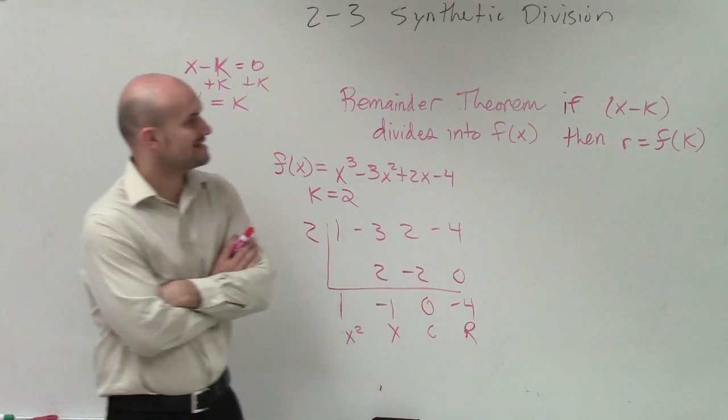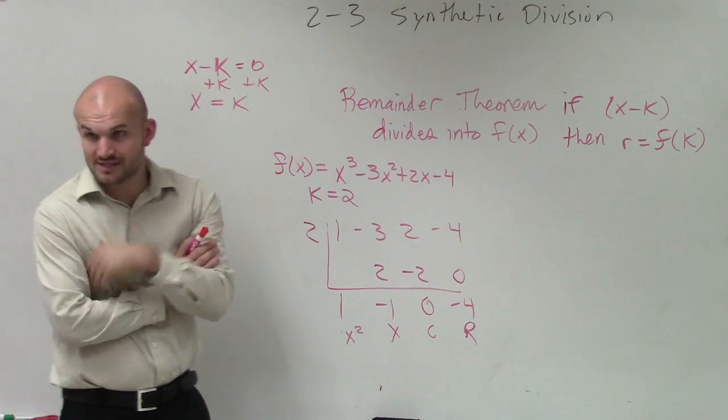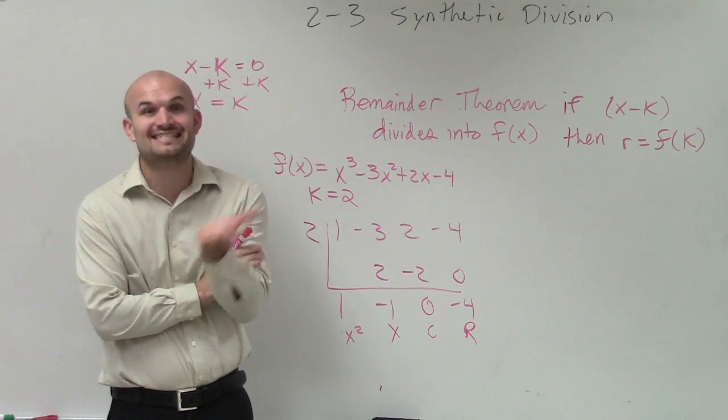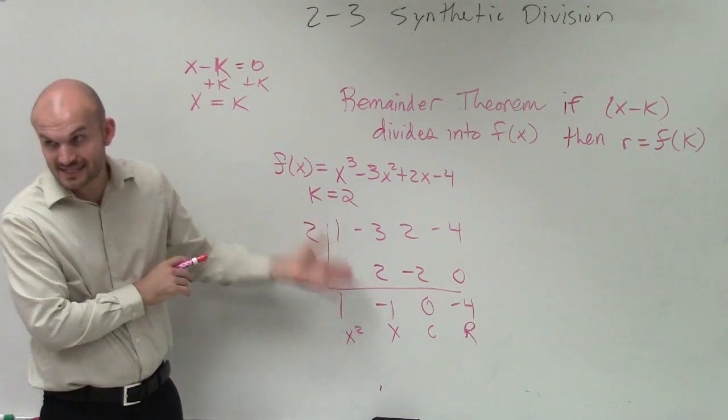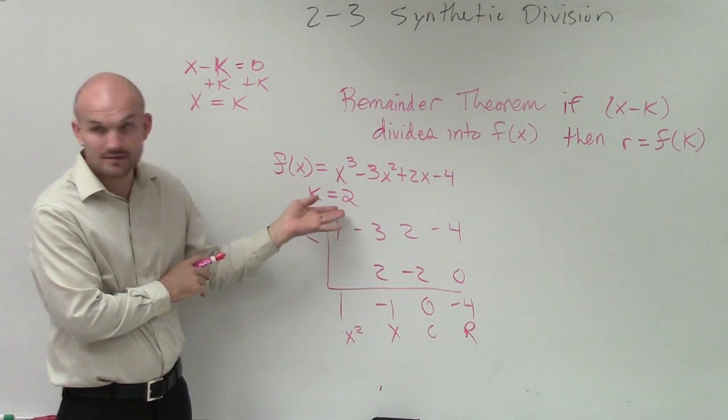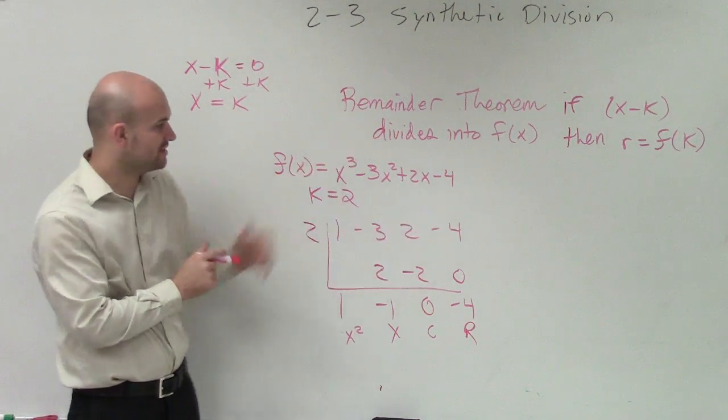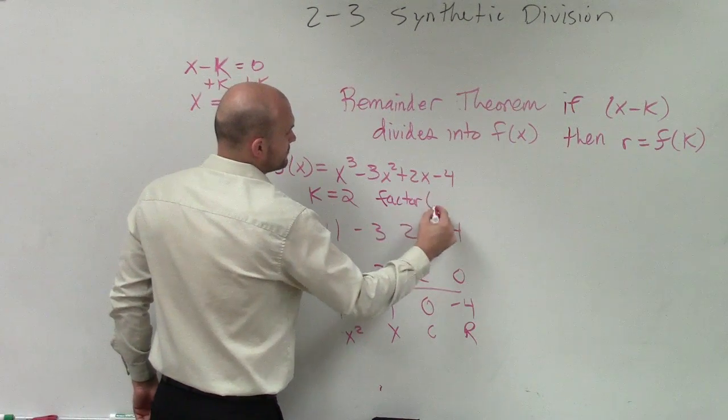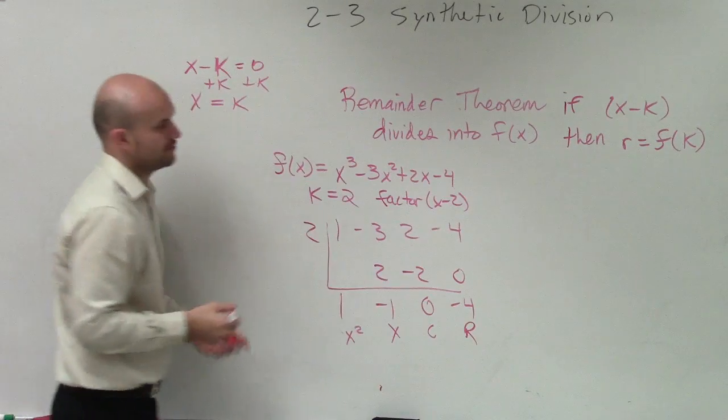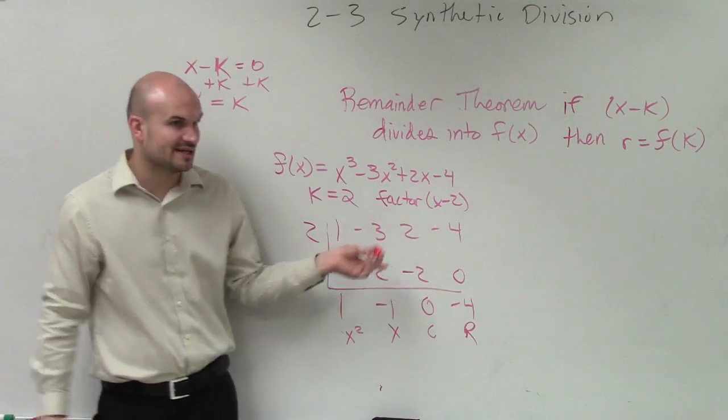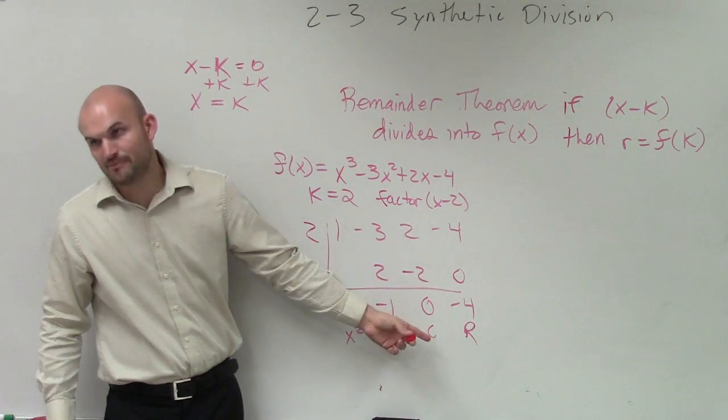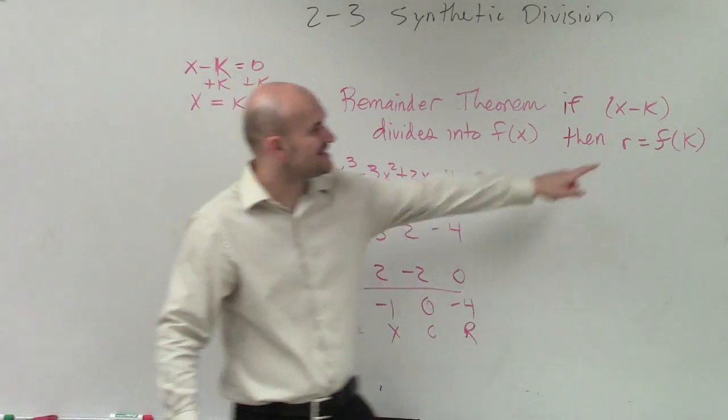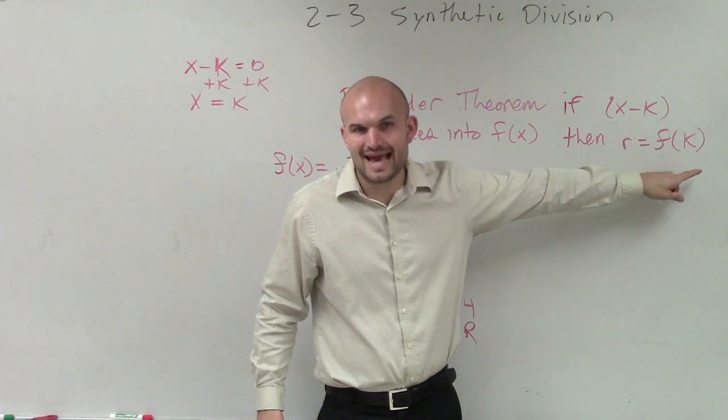Now, let's go back up to this remainder theorem and see what this says. The remainder theorem says if x minus k divides into it. It doesn't say has to divide into evenly. It just says if it divides into it. We can divide x minus two by using synthetic division of the zero, but we get a remainder. But then what it says is our remainder equals f of k.